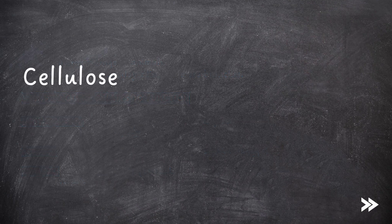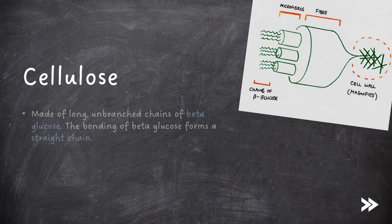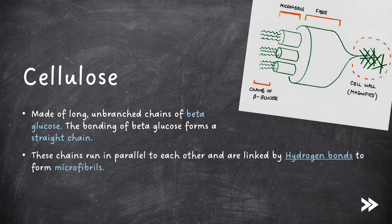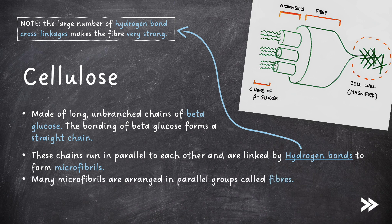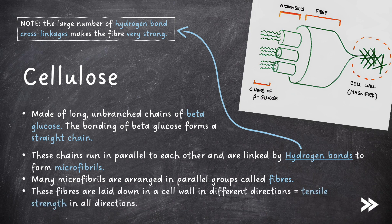Finally, we have cellulose. Cellulose is made of long, unbranched chains of beta-glucose. The bonding of beta-glucose forms a straight chain. These chains run in parallel to each other and are linked by hydrogen bonds to form microfibrils. Note that the large number of hydrogen bond cross-linkages makes the fibre very strong. Many microfibrils are arranged in parallel groups called fibres. These fibres are laid down in a cell wall in different directions, creating tensile strength in all directions.